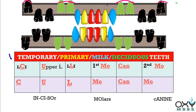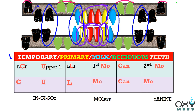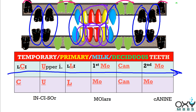In primary dentition, the first teeth to appear are these 2 lower central incisors, then upper incisors, then lower lateral incisors, then first molars, then canines, and finally these second molars. So if you are asked which teeth appear first in primary dentition, the answer is lower central incisors, and the last to appear in temporary dentition are second molars.